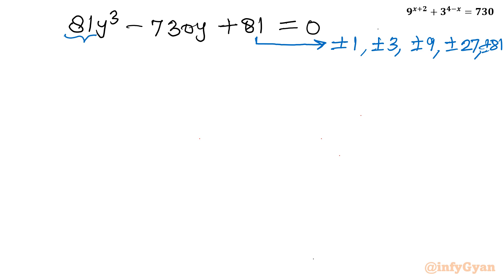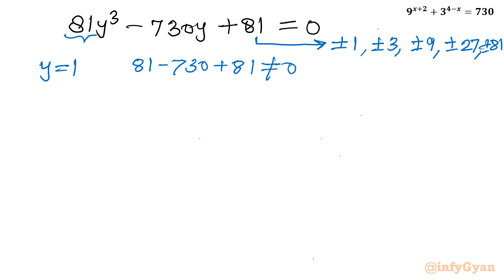To find eligible solutions, we consider the ratio of constant factors over the leading coefficients. Let me put y equal to 1: 81 minus 730 plus 81 — that is not zero. If I put y equal to minus 1: minus 81 plus 730 plus 81 — again not zero.